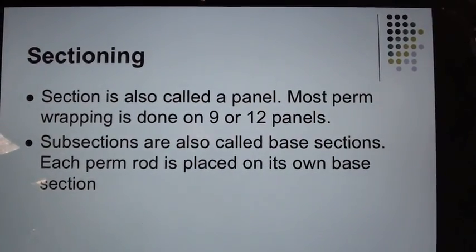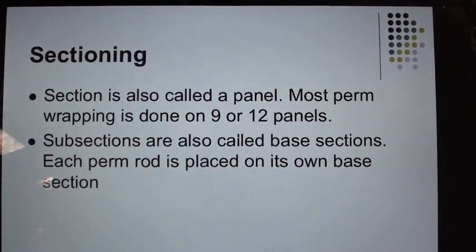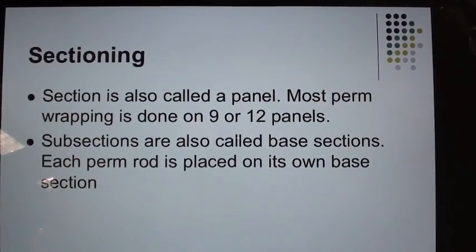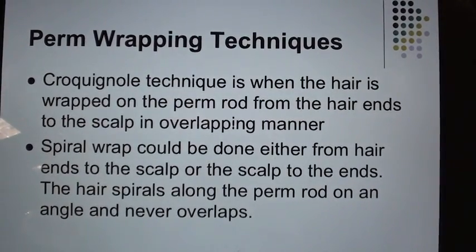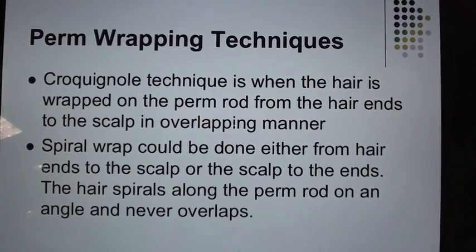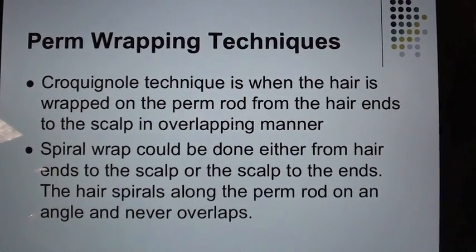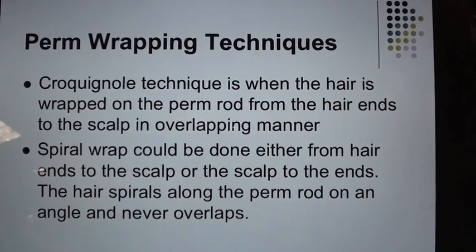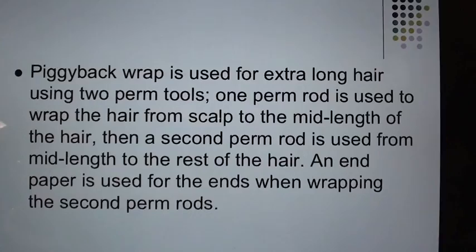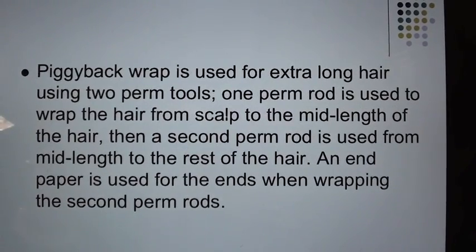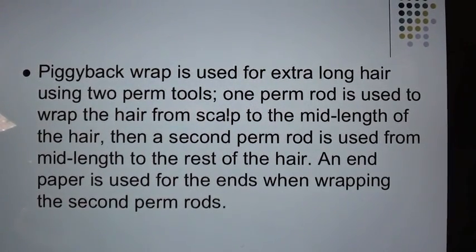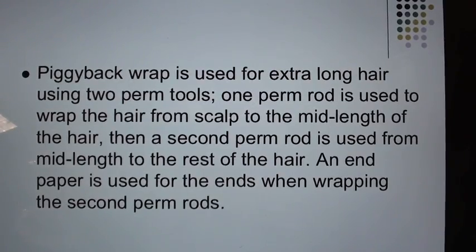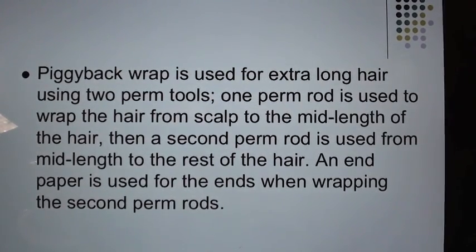Sectioning: A section is also called a panel; most perm wrapping is done on 9 to 12 panels. Subsections are also called base sections — each perm rod is placed on its own base section. Perm wrapping techniques: Croquignole technique wraps hair from the ends to the scalp in an overlapping manner. Spiral wrap can go from ends to scalp or scalp to ends — the hair spirals along the perm rod at an angle and never overlaps. Piggyback wrap is used for extra long hair using two perm tools: one rod wraps scalp to mid-length, a second rod wraps mid-length to the ends, with an end paper used for the ends.